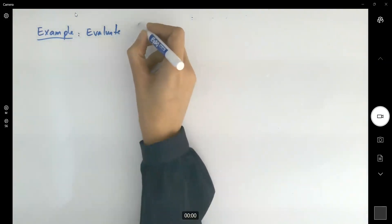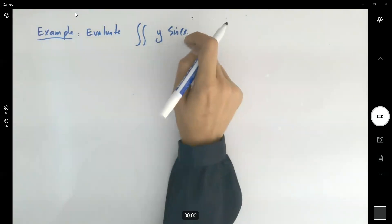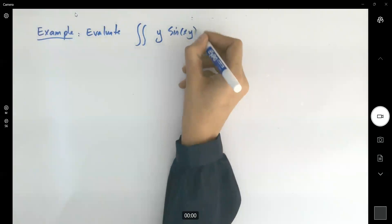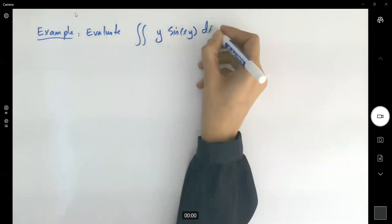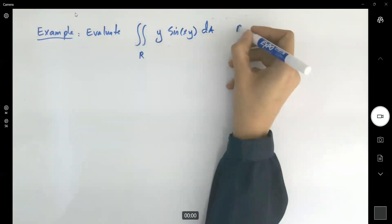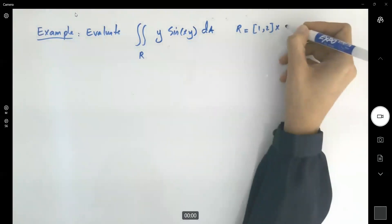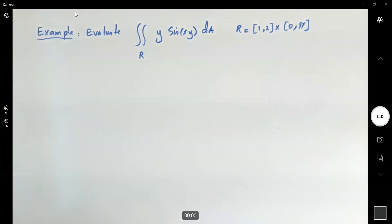Here you have the double integral of y times sine x times y, dA over region R. R is rectangle 1 to 2, Cartesian product 0 to 2 pi. Very good.